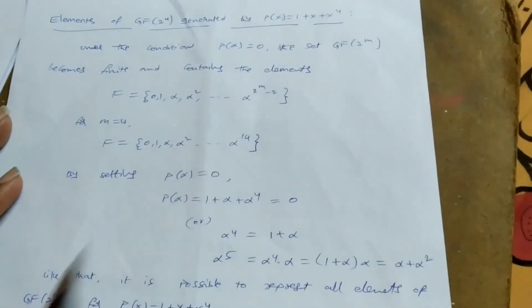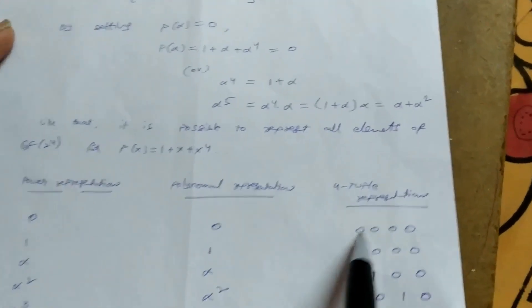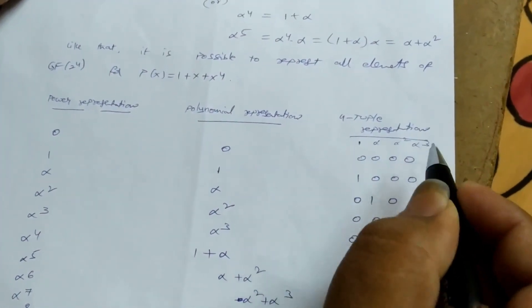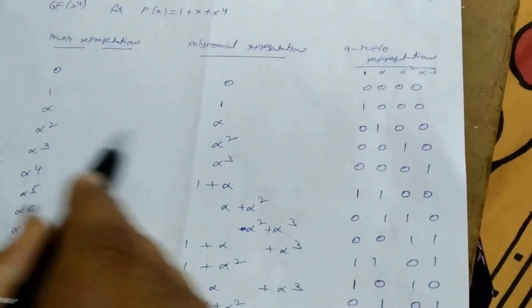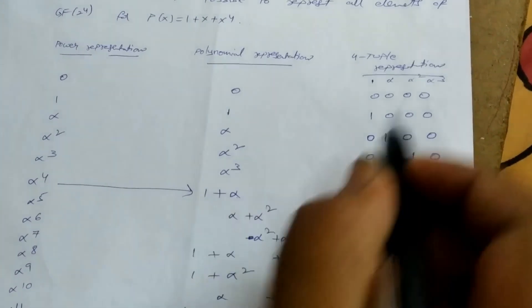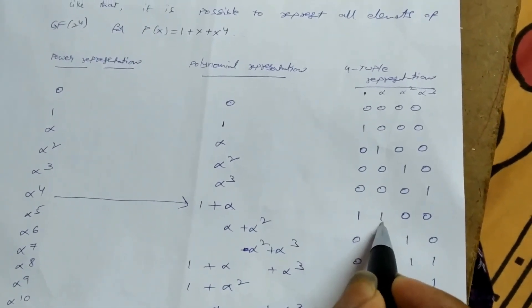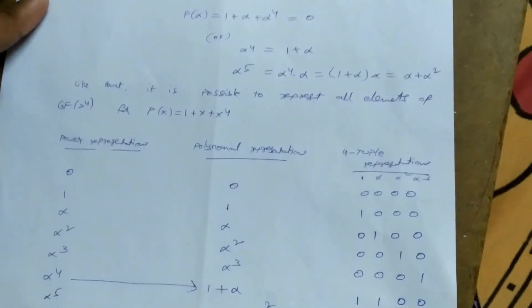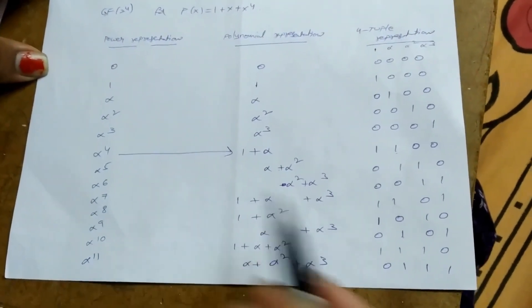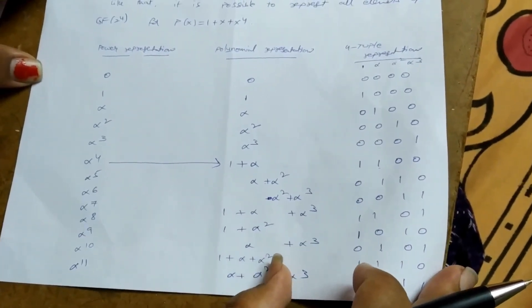The extension field GF(2⁴) for m=4 consists of elements {0, 1, α, α², α³, up to α^14}. We need to find conjugate roots — that is, separate all elements into different groups. If β is the base element, the conjugate roots are β, β², β⁴, β⁸, and so on. For β=α, the conjugate roots are α, α², α⁴, α⁸.